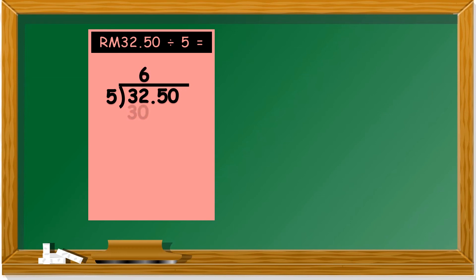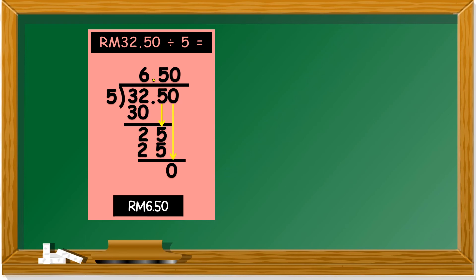So 2 minus 0 is 2. 3 minus 3, no more. We bring down one number. We get 25. Let's sing again. 5, 10, 15, 20, 25. We got 25. 25 is how many fingers? 5. Then the last digit, 0. We get our answer, which is RM6.50.